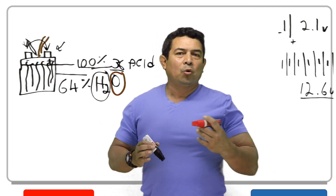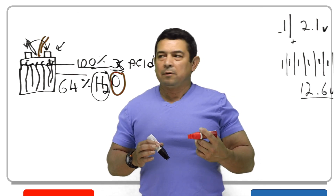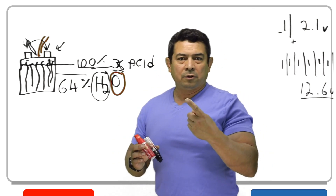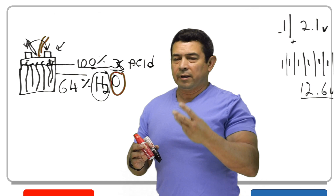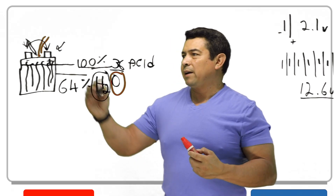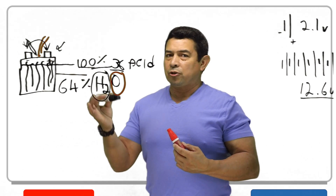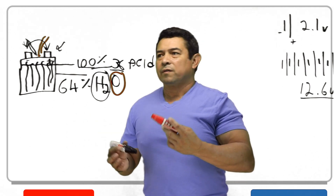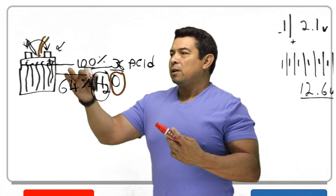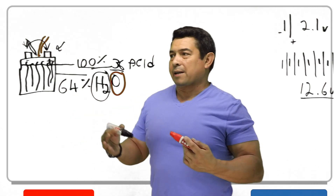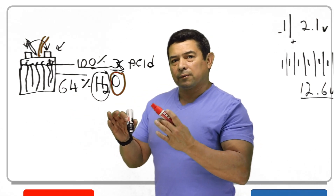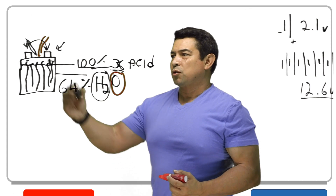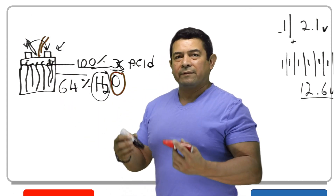Now let me ask you a question — what do you need for a fire? We need three things: fuel, oxygen, and heat. So now we have the hydrogen — that's the fuel — and we have the oxygen. And if someone comes in and creates a spark, or if someone comes in smoking, then you're going to have a fire. So we have to be very, very careful around batteries that are charging.